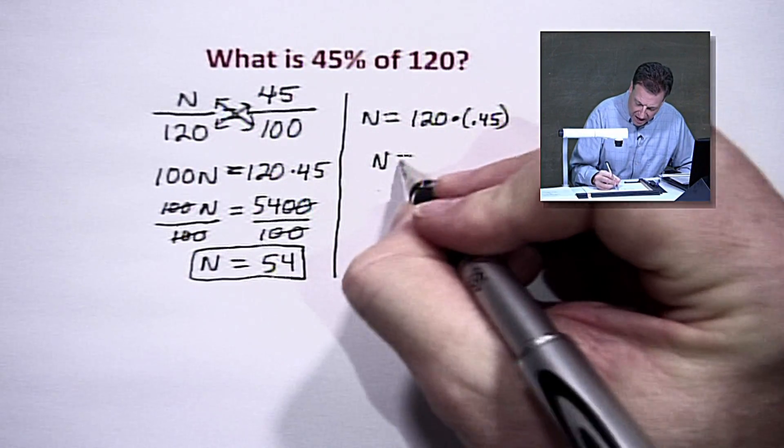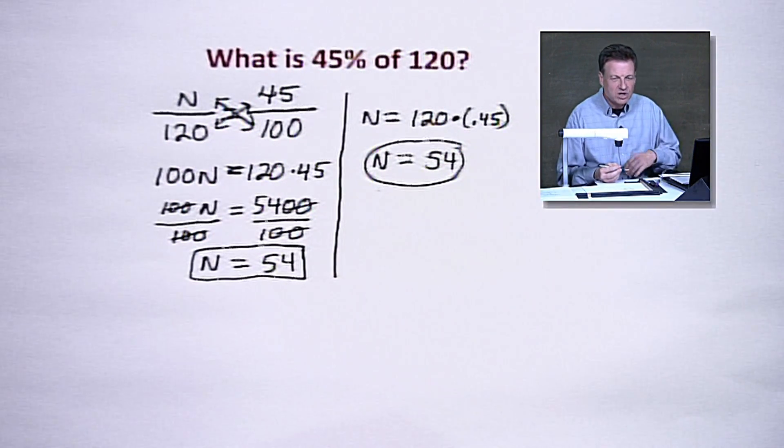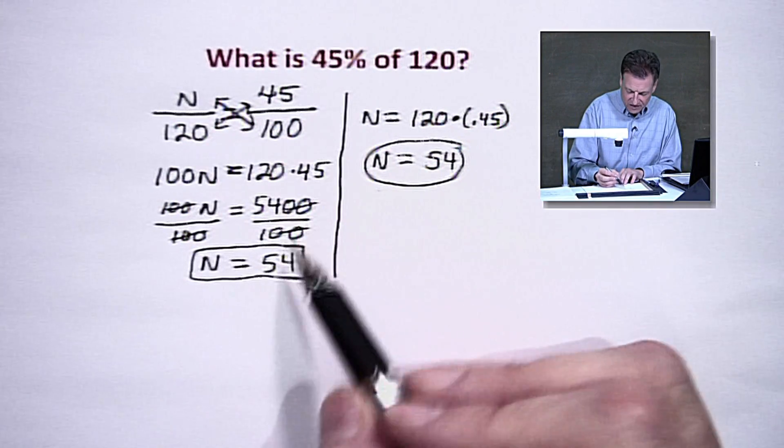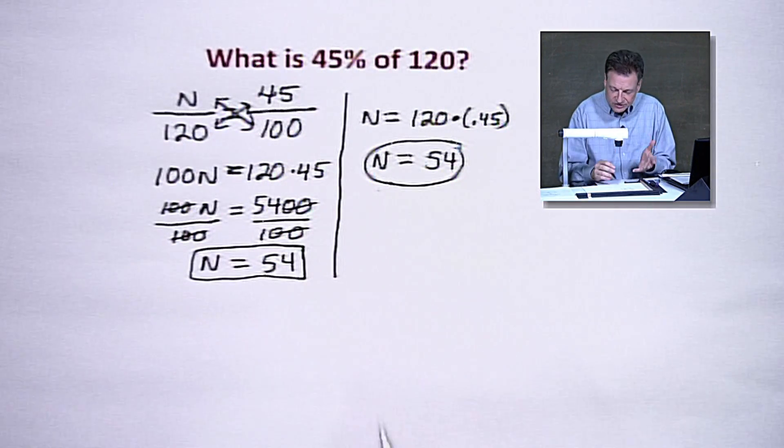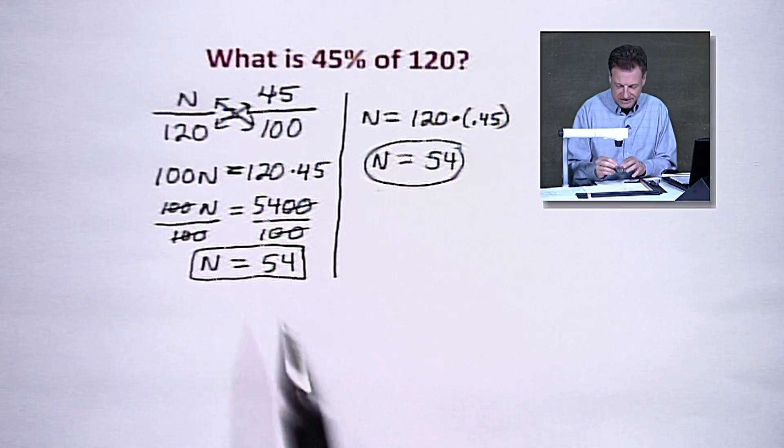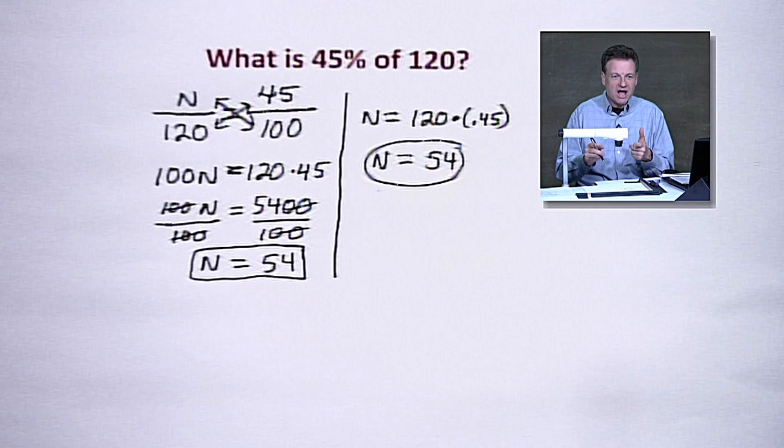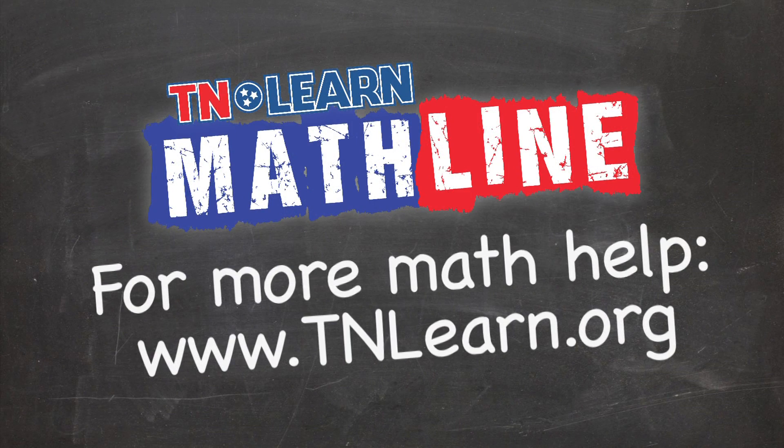So again, either way is a good option. And it kind of depends on where you are in your world of learning your percent problems. Some of your teachers have gotten you to a point where you're good at cross multiplying. You're working with ratios, proportions. You tackle it. Works great. Over here, some of you are getting into decimal work. Works great also. For more math help, visit tnlearn.org.